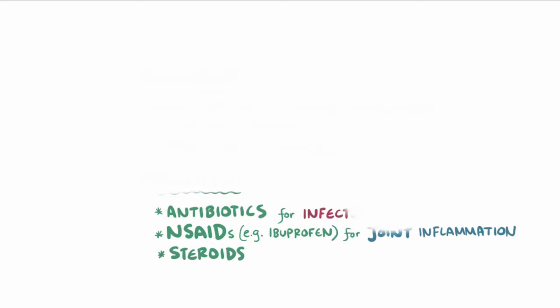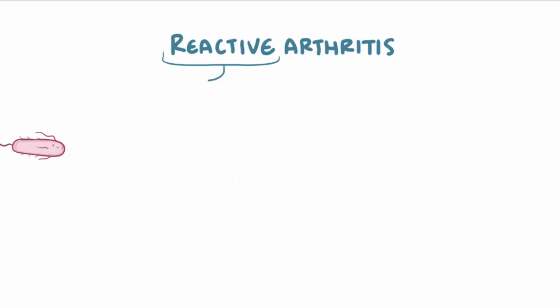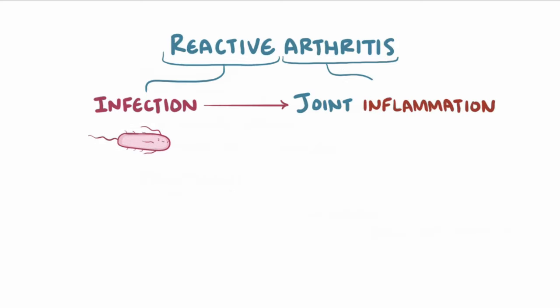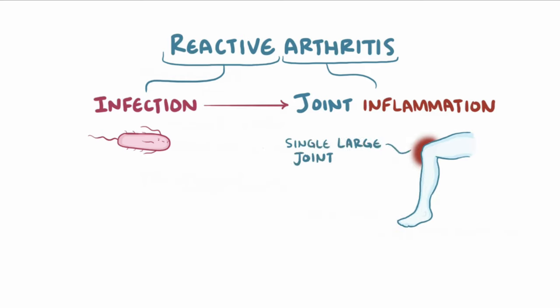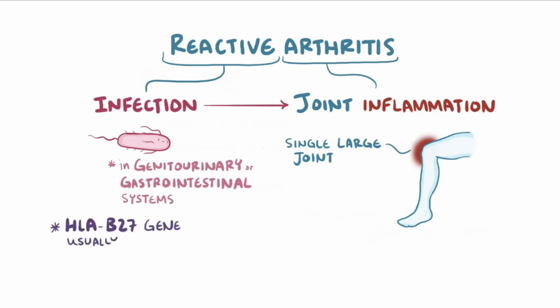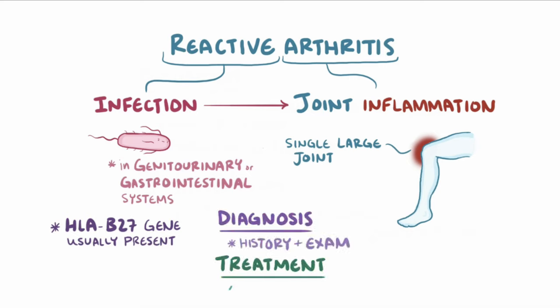As a quick recap, reactive arthritis is when an infection triggers joint inflammation somewhere else in the body, usually in a single large joint. Typically, the initial infection happens in the genitourinary or gastrointestinal system, and the gene HLA-B27 is present in most of these individuals. Diagnosis is made on history and examination, and treatment is with antibiotics and anti-inflammatory medication.